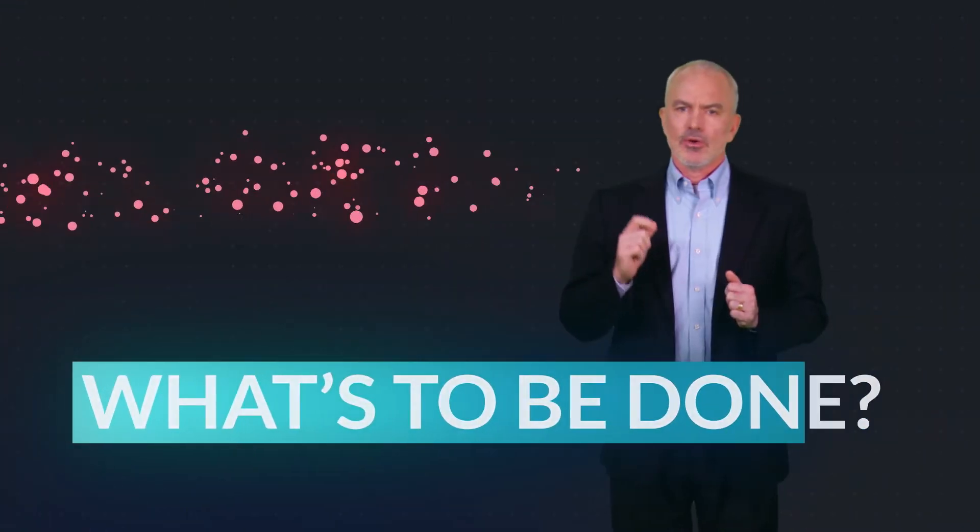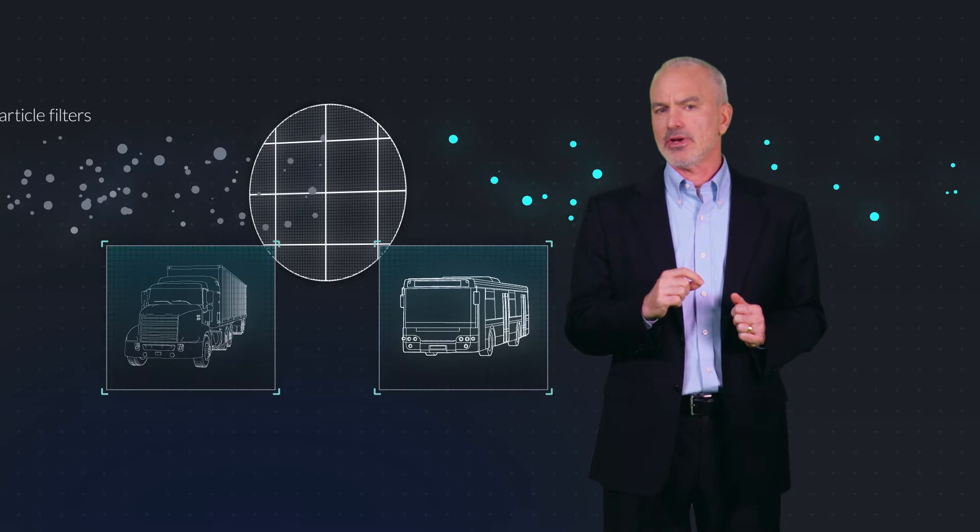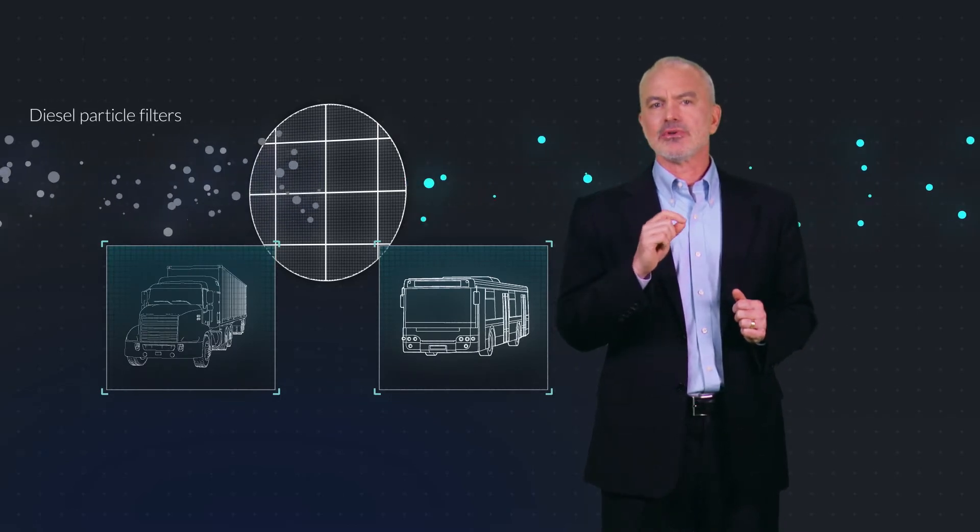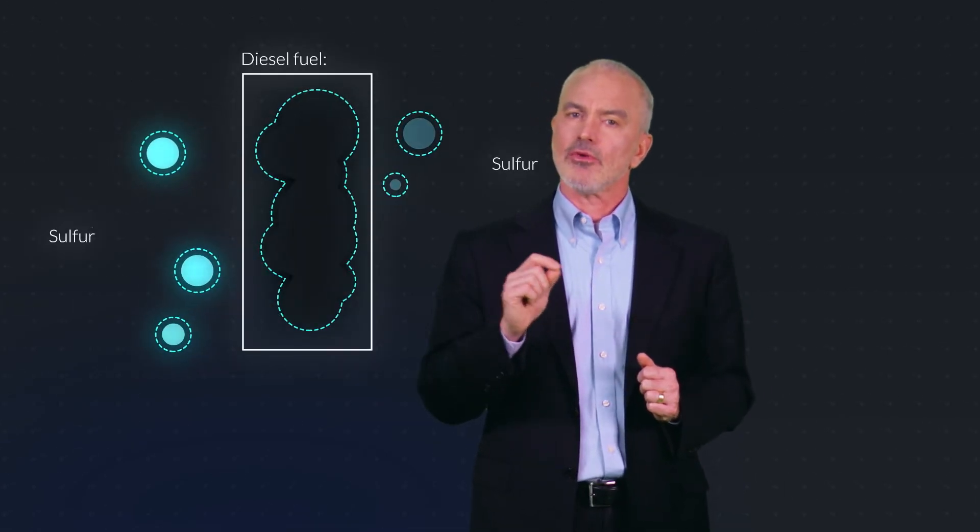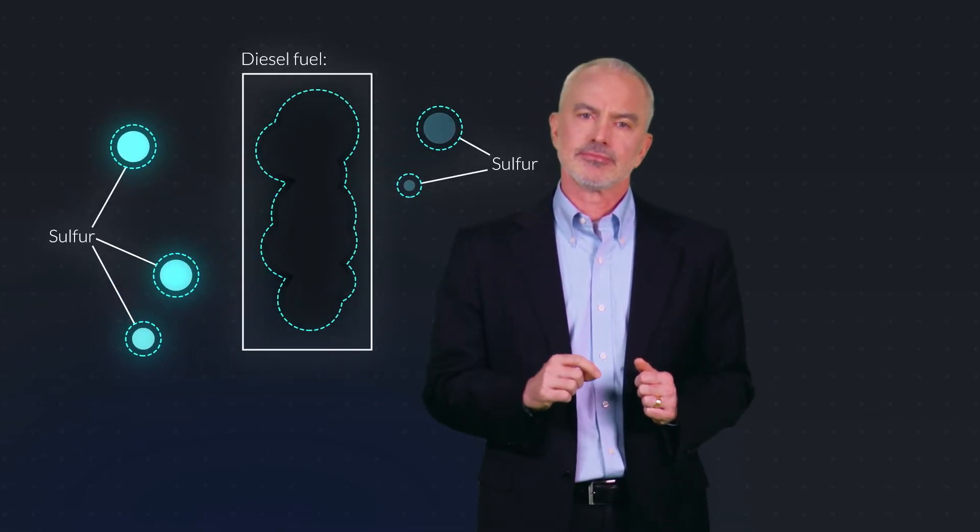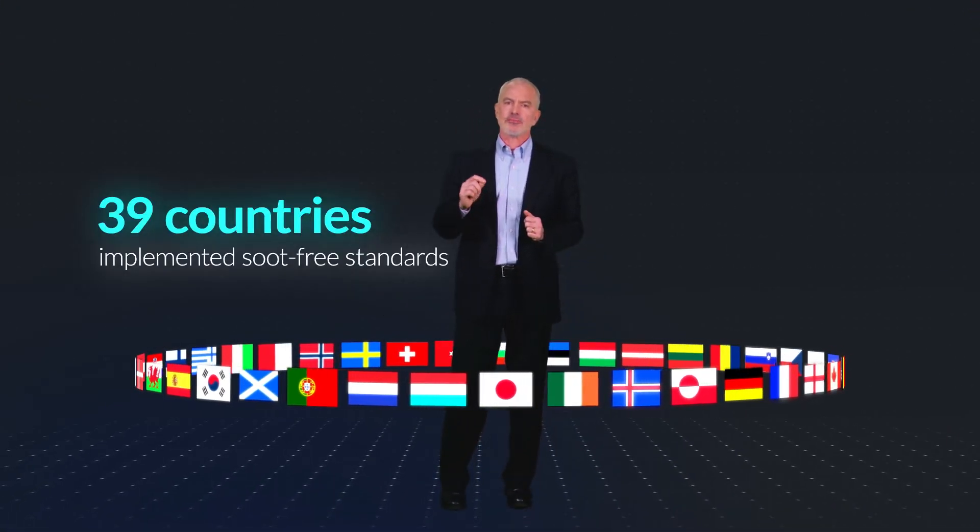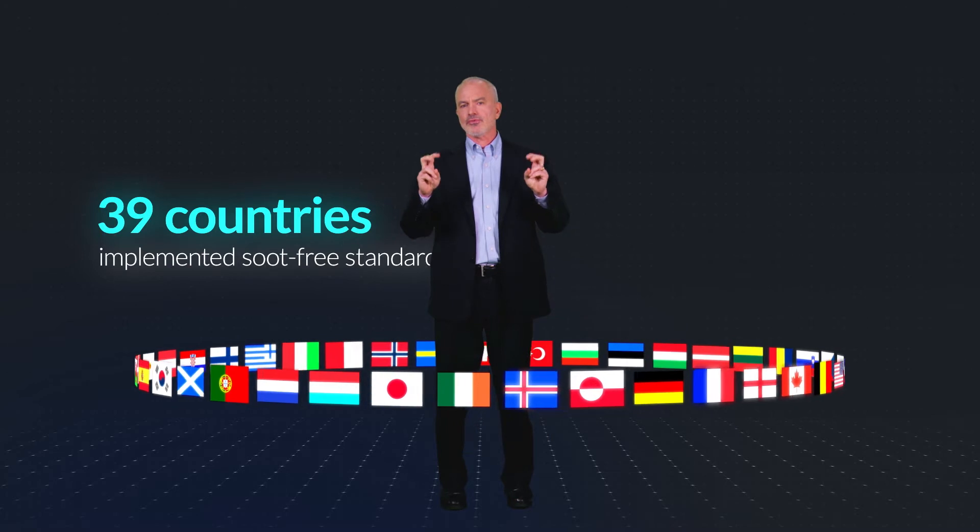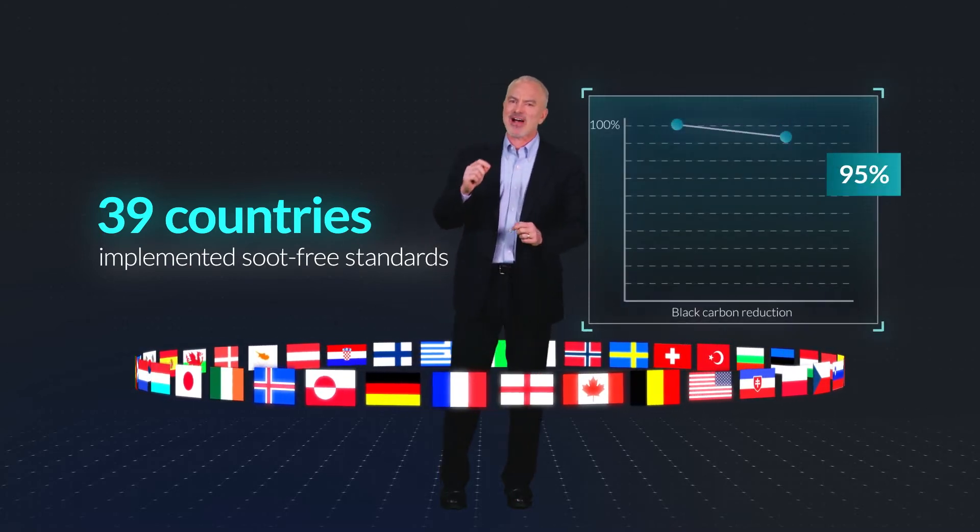So what's to be done? One option is to clean up diesel engines by installing diesel particulate filters on all new trucks and buses and even some vehicles in the existing fleets. In most cases, this requires oil companies to remove sulfur from diesel fuel. In 2019, 39 countries have implemented what we call soot-free standards for new heavy-duty diesel engines that achieve better than a 95 percent reduction in black carbon emissions.